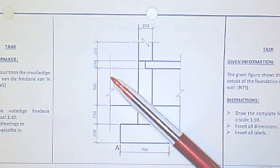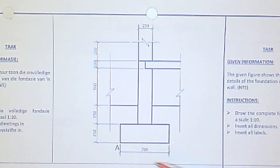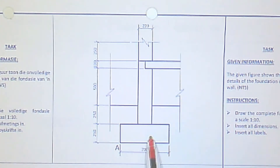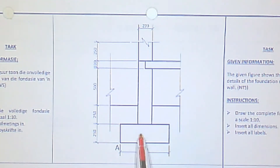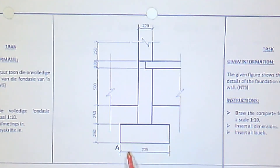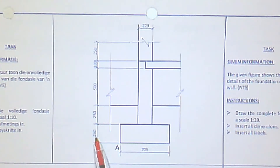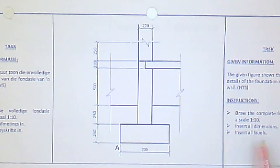For the width of the foundation strip, the given dimension is 700 - remember this strip runs all along the length of the wall throughout the building. The height of the foundation strip is 250. However, I'm going to ignore the 700 width today and show you an alternative method for when the foundation width is not given.